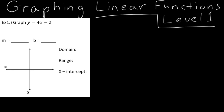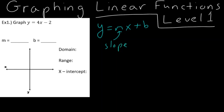The first thing we want to do is always write down what is our overall function for linear functions. So that's going to be y equals mx plus b, where we know that m is going to be our slope, and we know that b is going to be our y-intercept. It's always imperative that we label our slope and our y-intercept right off the bat. Your slope, this m, is always going to be in front of the x. So when I look at y equals 4x minus 2, I know that 4 is going to be my slope.